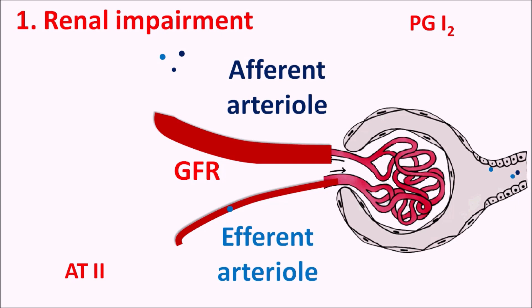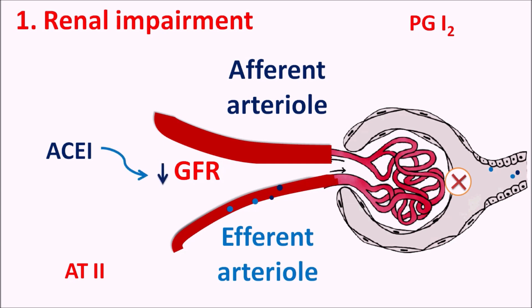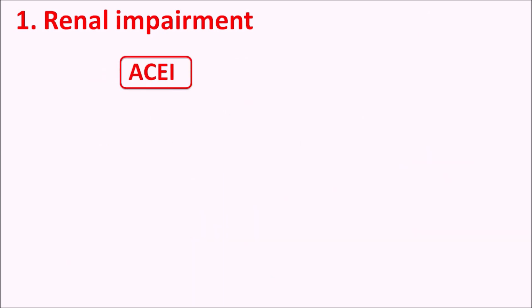Vasoconstriction of the efferent arteriole mainly produces the filtration pressure which increases the rate of filtration. ACE inhibitors inhibit the synthesis of angiotensin II, thereby preventing angiotensin II-mediated vasoconstriction, leading to loss of vasoconstriction and decreased filtration pressure. When efferent arterioles are not constricted, filtration pressure is reduced and molecules pass into the efferent arterioles unfiltered, reducing the glomerular filtration rate and causing renal impairment.